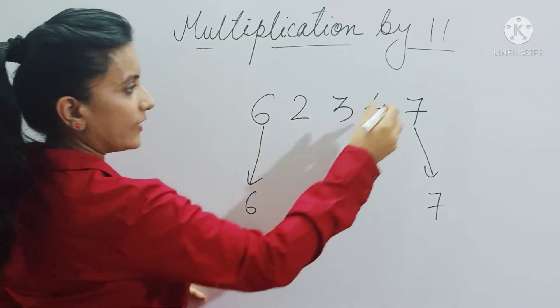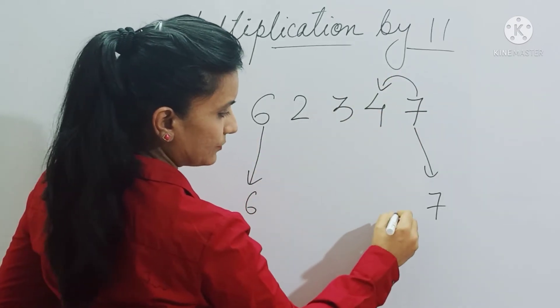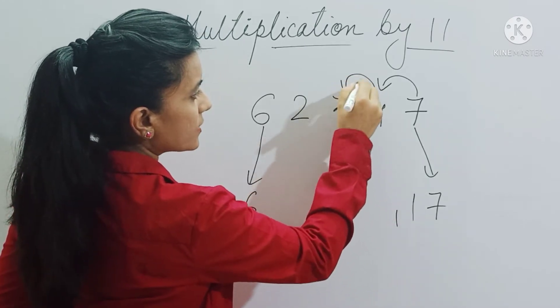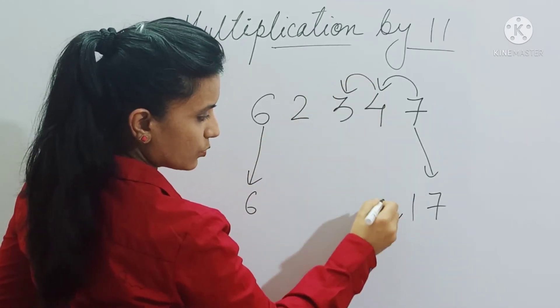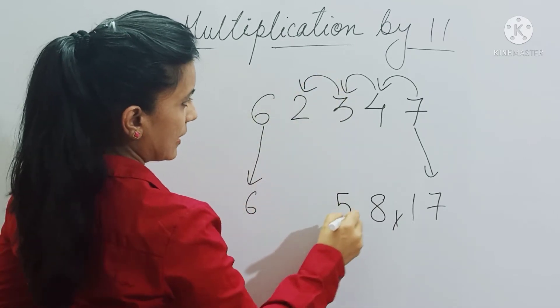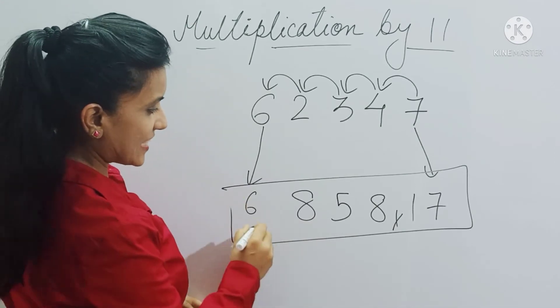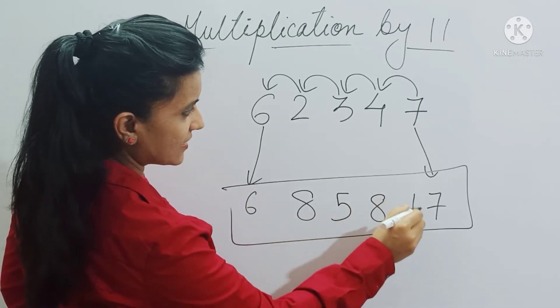Now let's start adding the numbers in pairs. So 7 plus 4 is 11, 4 plus 3 is 7, 7 plus 1 is 8, 3 plus 2 is 5, and 2 plus 6 is 8. So your answer is 685,817.